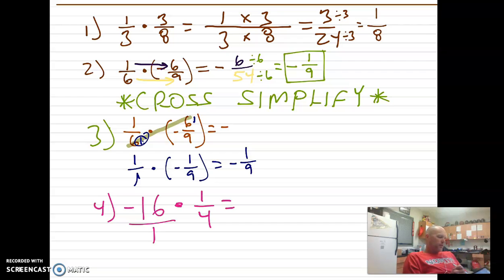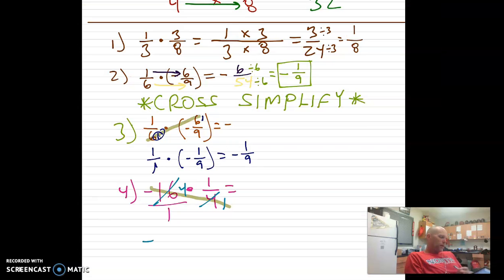Alright, so I want to do that cross-simplifying again. Obviously, 1 and 1 have something in common. But what about right there? Negative 16 and 4. What do they have in common? They have 4 in common. So we can simplify by dividing by 4, alright? So that would be 1. And how many times does 4 go into 16? 4 times. So what is our problem now? Negative 4 over 1 times 1 over 1. So for those of you that really hate large simplifying, this cross-simplifying helps a ton, okay? It's smaller numbers.